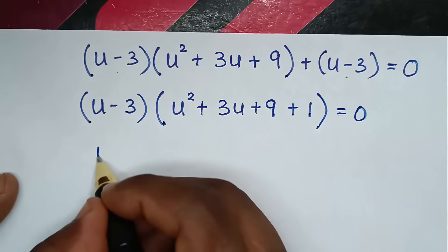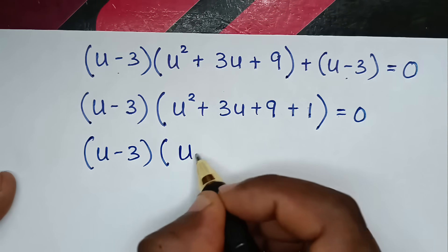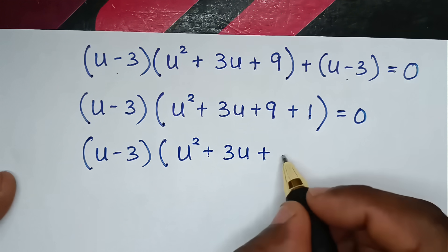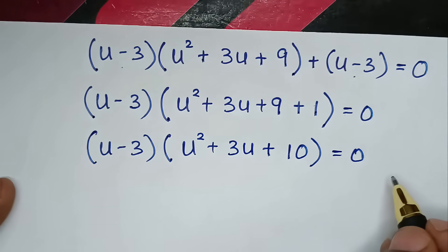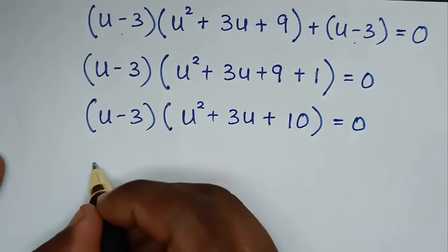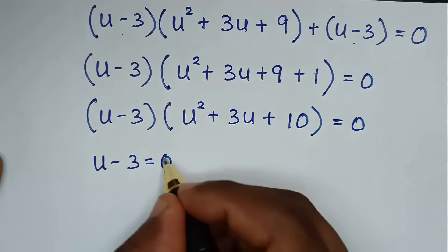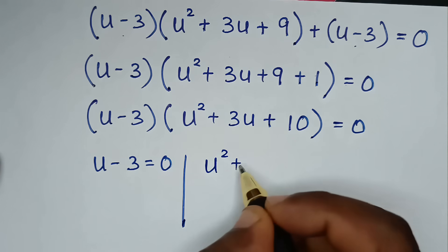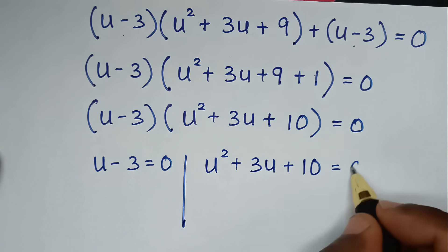From here we have two solutions. The first solution: u - 3 = 0. The second solution: u² + 3u + 10 = 0.